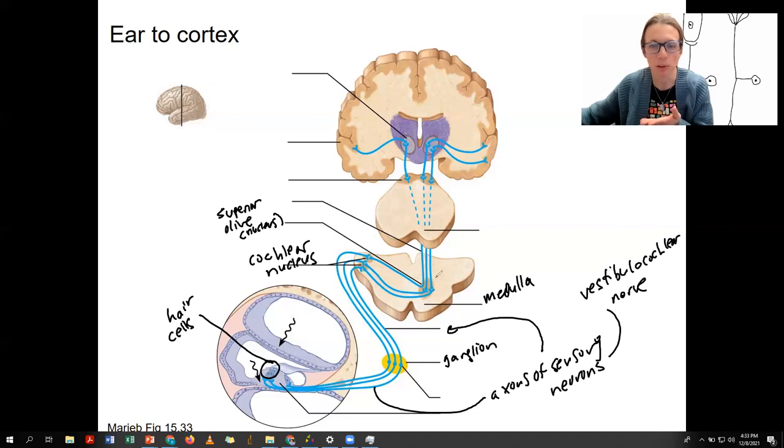So it's actually a little bit more superior than the cochlear nucleus. So it's a second synapse. Actually, it's a third because of the ganglion. One, two, three. The information is going to travel ascending through the midbrain.